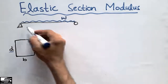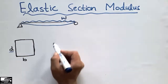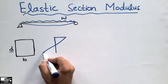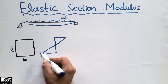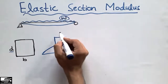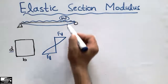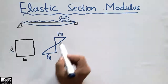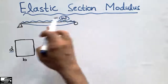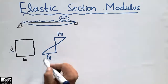Due to this load W, the beam will start deflection and deformation. The stress diagram of this beam will look like this. Let's take an example where this load causes stresses in the beam. If yield stresses are reached due to this load W, then the stresses at the top and bottom are both yield stresses.